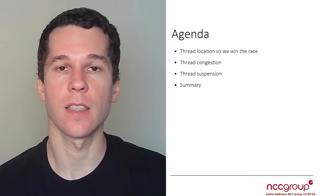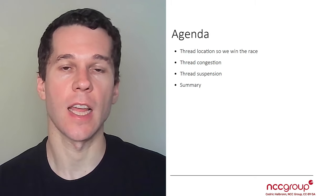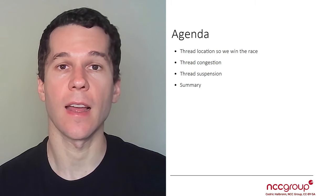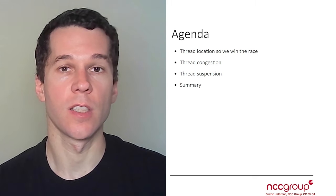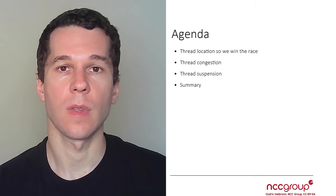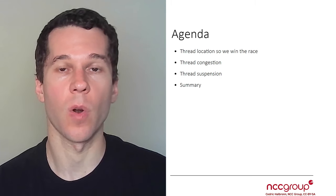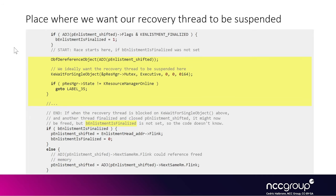We are going to look into where we can have the recovery thread blocked so we can effectively win the race condition. We are going to see how we can congest the resource manager mutex to increase the chance of winning. We are going to see how we can block the recovery thread forever until we decide to unblock it. This is the important code in the tmRecoverResourceManagerVulnerable function — we basically want to be suspending the recovery thread in this yellow region, and the reason is we want the bEnlistmentIsFinalized flag to be set to 0 still.